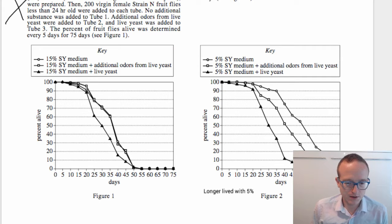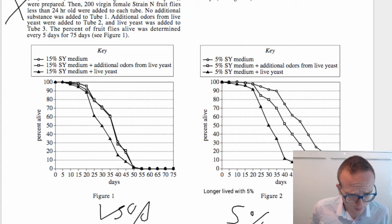Well, I can tell, between the figure on the left and the figure on the right, the curve is shifted to the right on the figure on the right. So why would that be? Well, here they give me the key. This is all 15% SY medium, this is all 5% SY medium. So I'm trying to figure out what the difference is between these two graphs because they look similar. This one is 15%, this other one is 5%.